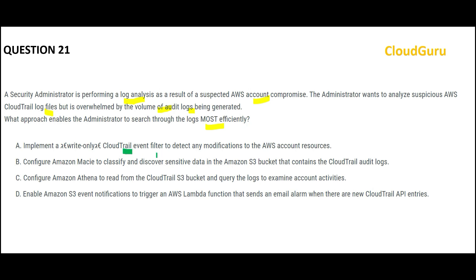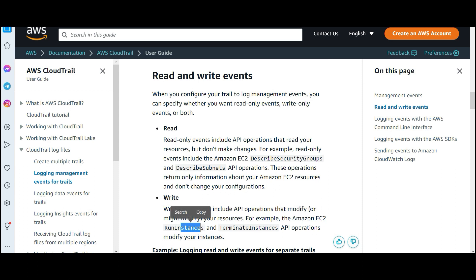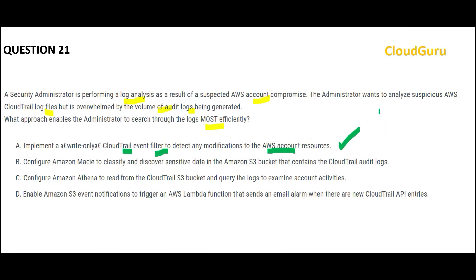Option A says they will use CloudTrail events with a filter that will detect any modifications to the account resources. That works because that is the purpose of CloudTrail. If you use write-only events, they include API operations that modify your resources — for example, EC2 RunInstances and TerminateInstances API operations that modify your instances. Such events it is capturing. So this looks correct until we find a better option.